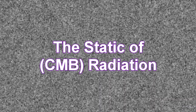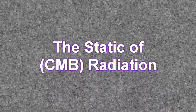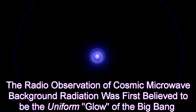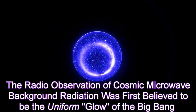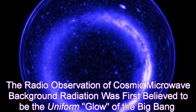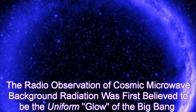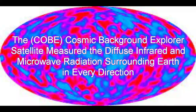The static of CMB radiation. The radio observation of cosmic microwave background radiation was first believed to be the uniform glow or echo of the Big Bang. The COBE satellite measured the diffuse infrared and microwave radiation surrounding Earth in every direction.